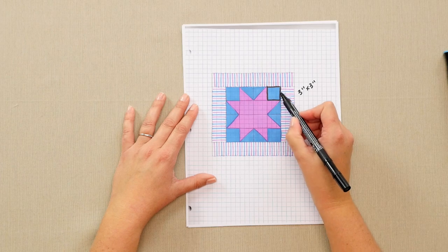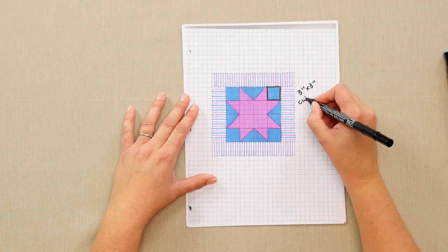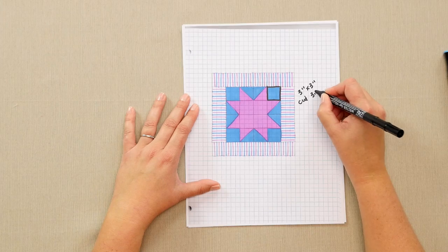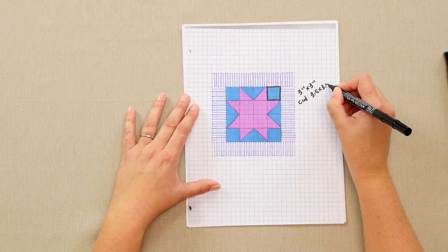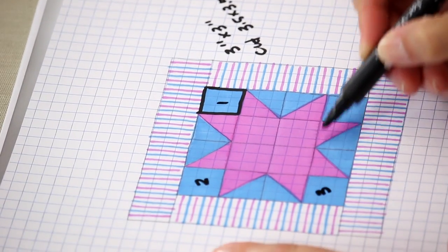When I add my seam allowance of a quarter inch on all sides, I'll need to cut three and a half inches by three and a half inches for each one of my corner blocks.